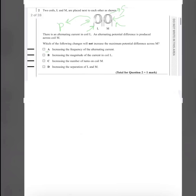Which of the following will NOT increase the maximum potential difference across M? For option A — increasing the frequency of the alternating current: we know frequency equals 1 divided by time period, and EMF induced equals N·Φ/t. If we increase the frequency, the time period decreases, so the EMF induced increases. Since EMF induced is the potential difference, A is correct — it will increase.